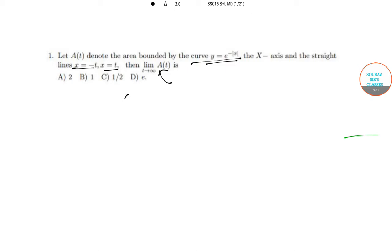So f(x) = e^(-|x|). This one is an even function because of the modulus. It does not matter if you put f(-x), it will come to the same thing. Now A(t) is the integral from -t to 0 and 0 to t of e^(-|x|) dx.